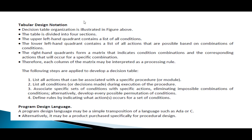Another type of notation is tabular design notation - a table with a number of rows and columns. The table is divided into four sections. The upper left quadrant contains a list of all conditions. The lower left quadrant contains a list of all actions that are possible based on combinations of conditions. The right-hand quadrants form a matrix indicating condition combinations and the corresponding actions for a specific combination. Each column of the matrix may be interpreted as a processing rule. The following steps are applied to develop a decision table.